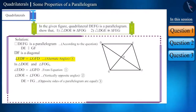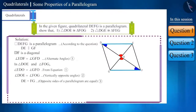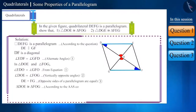Now look at equations 1, 2, and 3. In both these triangles, two angles and one side are equal. But this side is not the included side of these angles. So this triangle is congruent according to the AAS congruence rule.